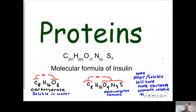In terms of their solubility, carbohydrates have equal parts oxygen to carbon, which makes them soluble in water because polarity is going to be a function of having more of the electronegative elements in proportion to their carbon and hydrogen. So having equal parts oxygen to carbon makes carbohydrates more soluble.